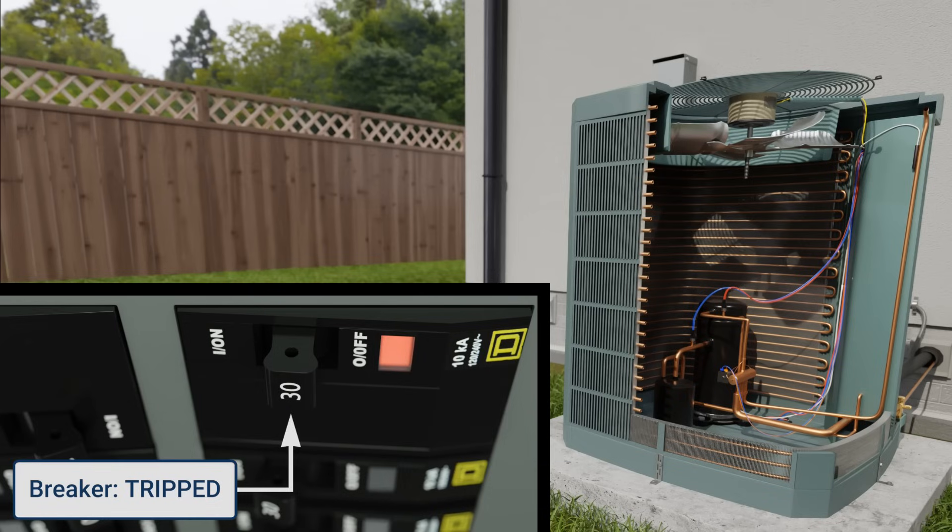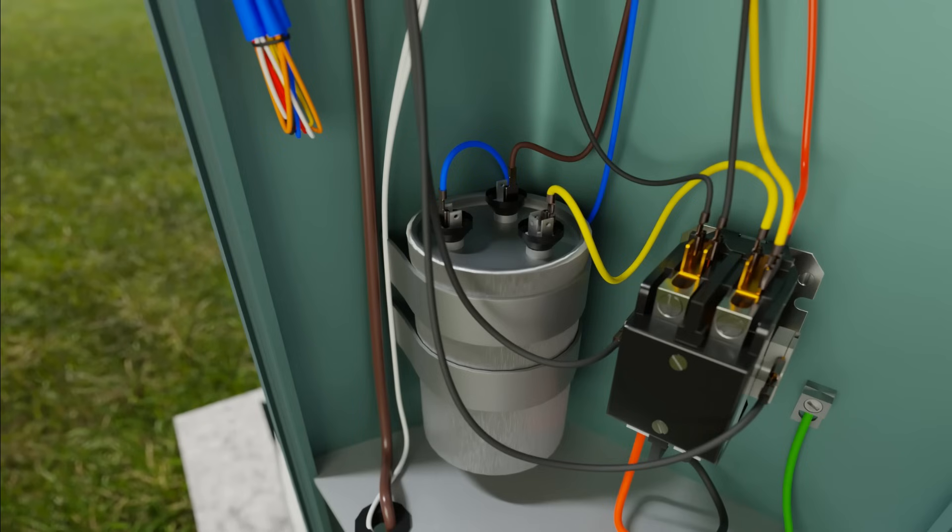If the breaker trips again, it's back to the drawing board. You need to test the other components. But at least now you have a step-by-step approach to diagnosing a grounded compressor.